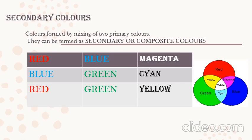Colors which are obtained by mixing any two primary colors are called secondary colors. Colors which cannot be formed by mixing are called primary colors. So you are clear with your primary color and secondary color.